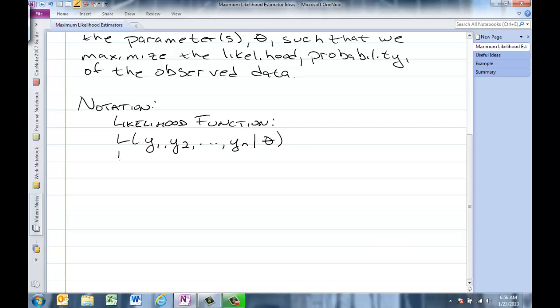The second notation, which I prefer, is the likelihood of the parameter given the data. The reason I like the second notation better, it makes us think that the data is given and the parameter is unknown, and our job is to find that.